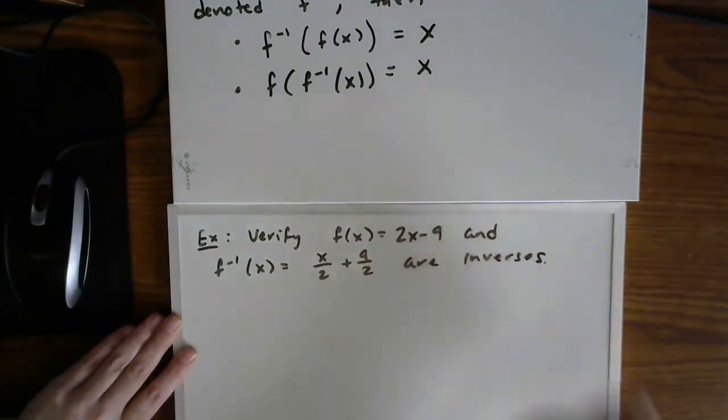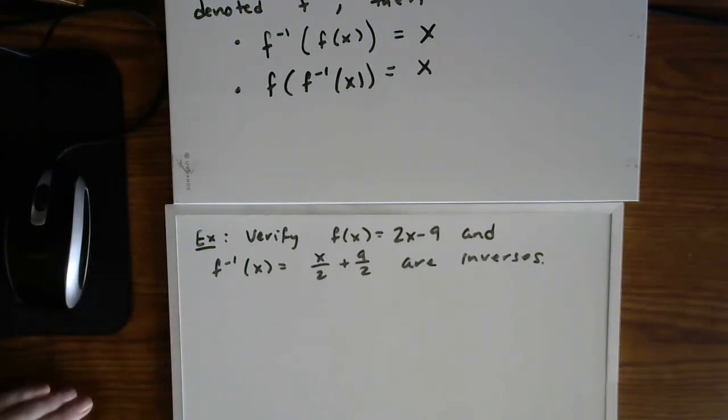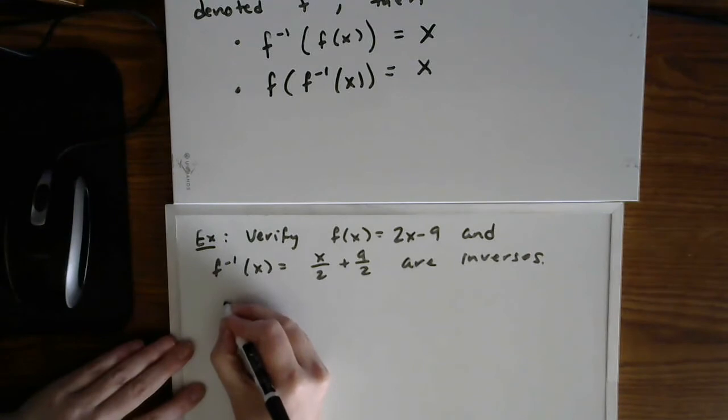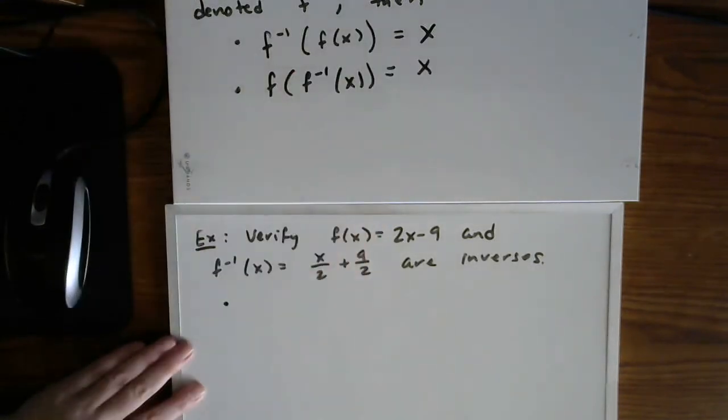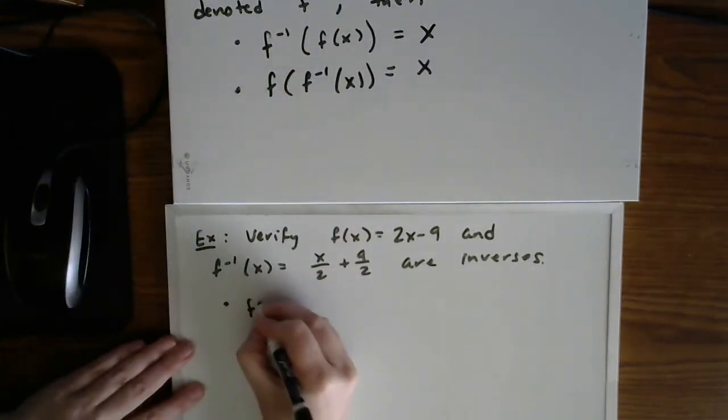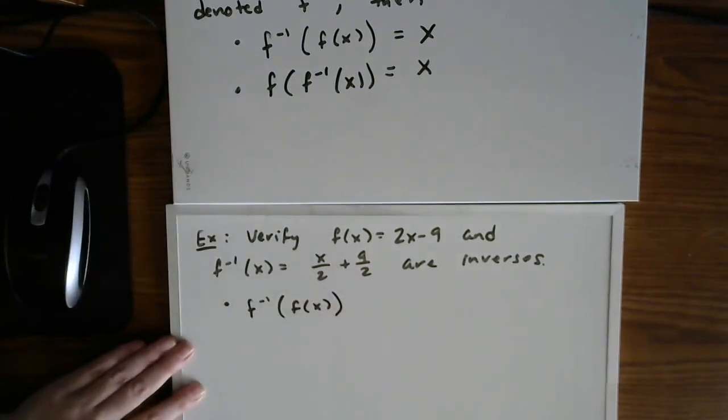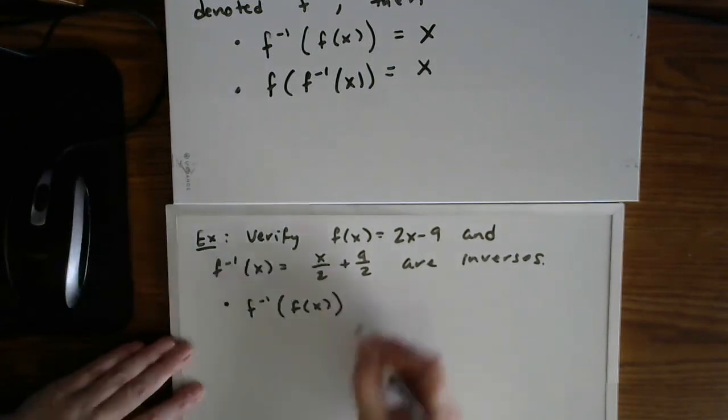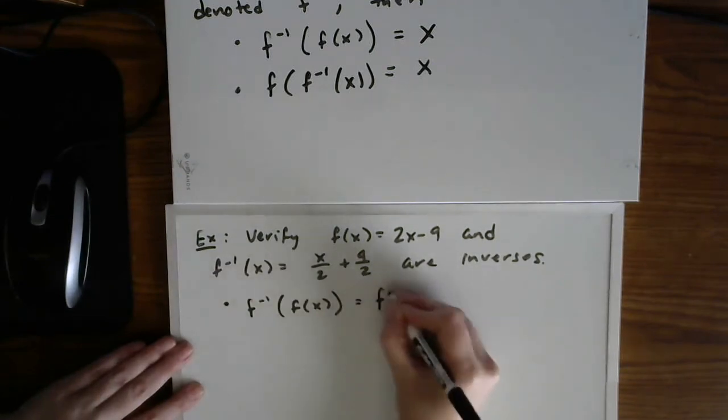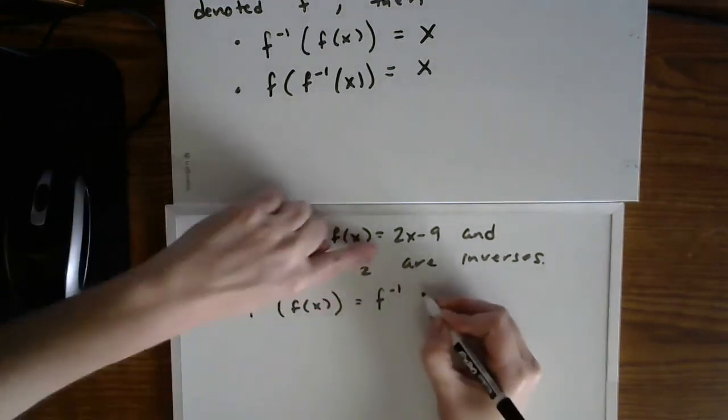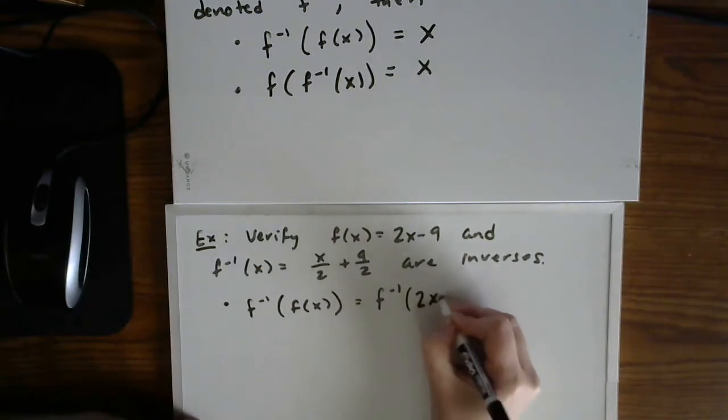So you will do several problems like this verifying algebraically. So let's go ahead and do the first bullet point in my composition, f inverse of f of x. So this is good review for composition. So first replace f of x with its function 2x minus 9.